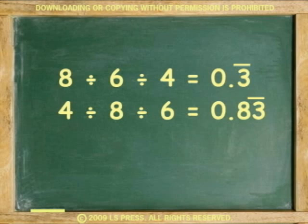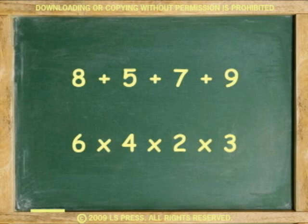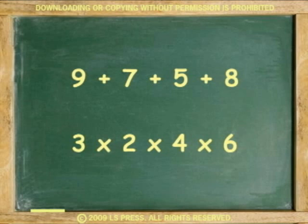This is what is called the commutative property of addition and multiplication. In other words, changing the order of the numbers will not affect the answer. The word commutative means exchange.